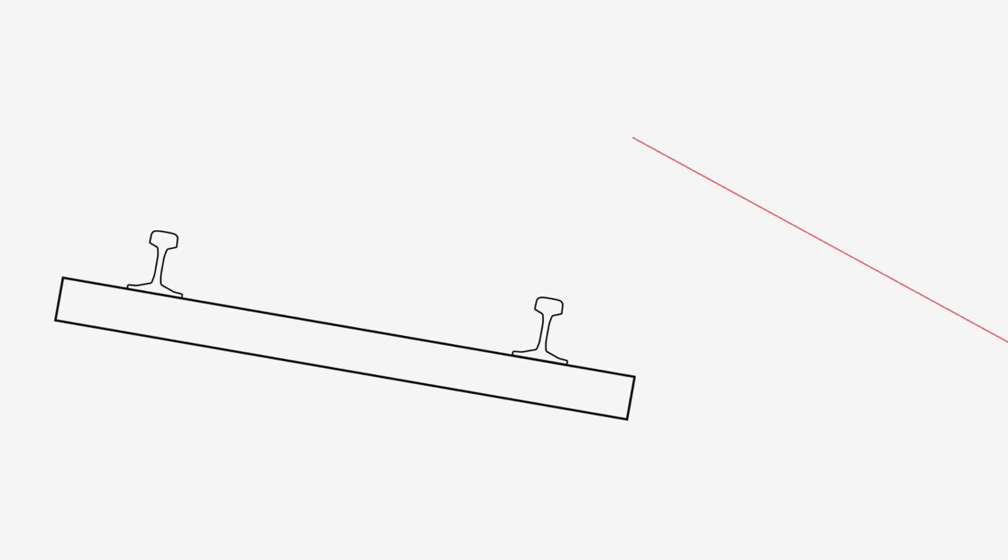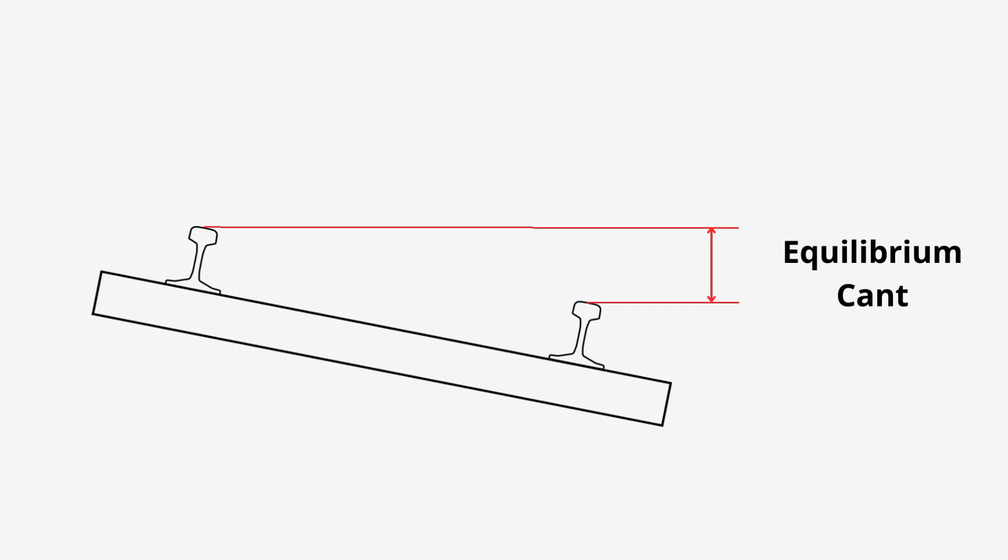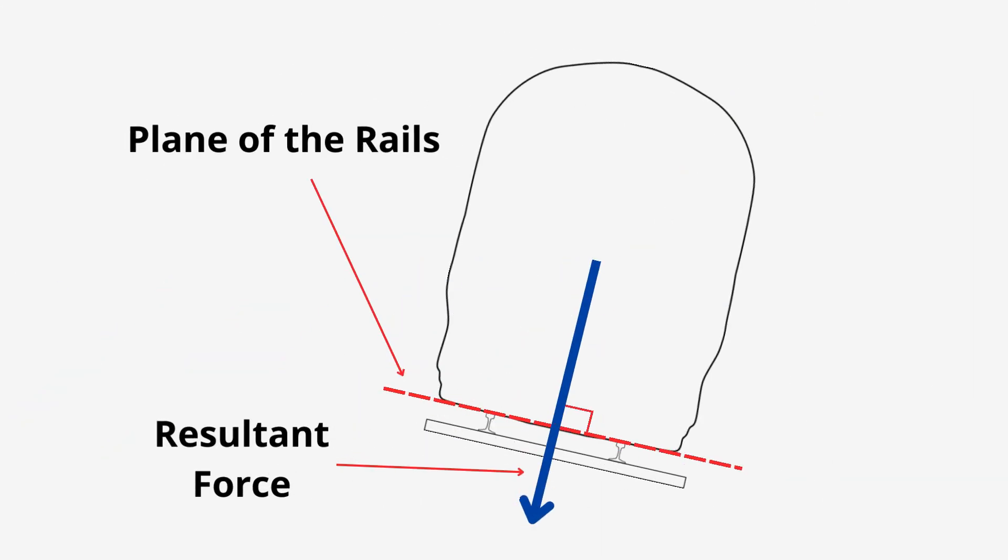Equilibrium cant is the value of cant which, when applied to the track, means the resultant force is perpendicular to the plane of the running rails. Now, if this doesn't make sense, don't worry. Keep watching as I will explain all.